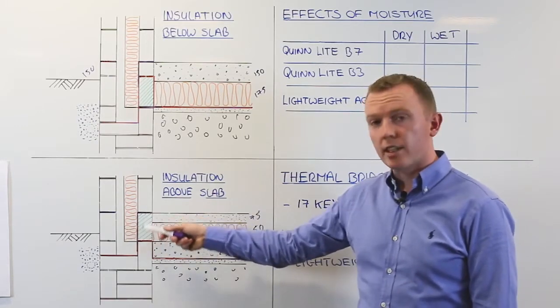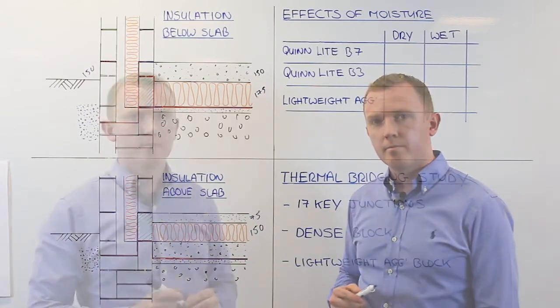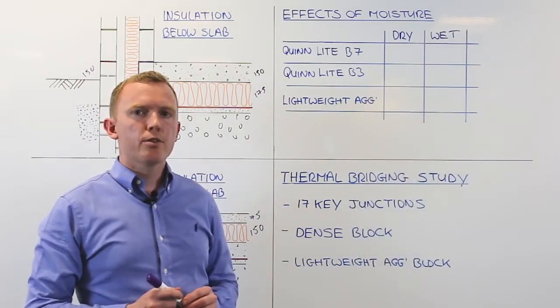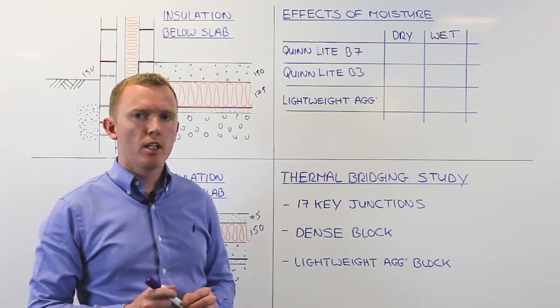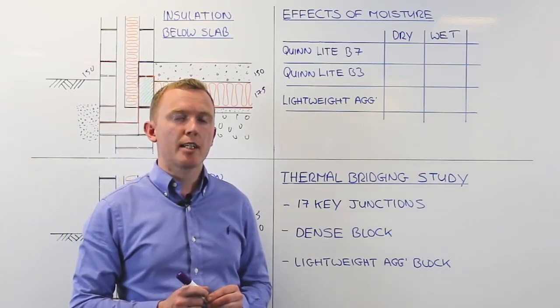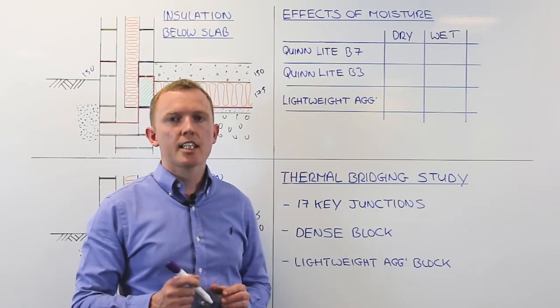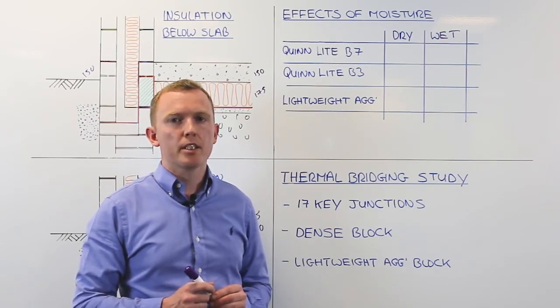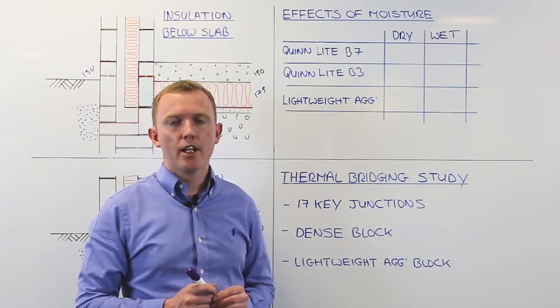So we have looked at two situations where our quinolite blocks can easily be kept dry at that critical floor to wall junction. We are going to look now at what happens to the quinolite blocks if they are subject to moisture. It has been brought to our attention that in some situations the detail hasn't been done correctly and the block may be subject to rising damp. So we have done some in-house testing to see how moisture will affect the thermal performance of the blocks.